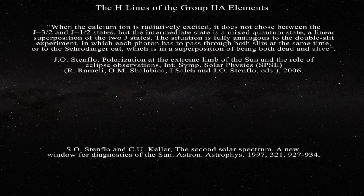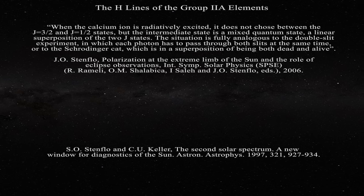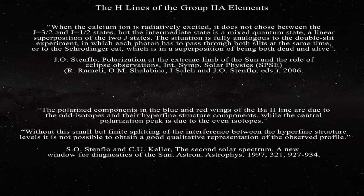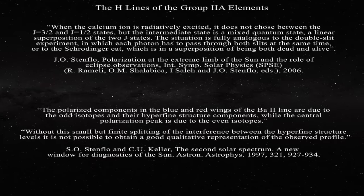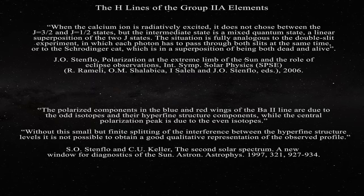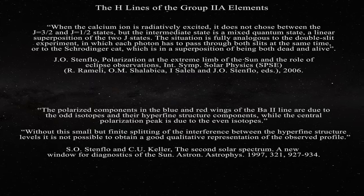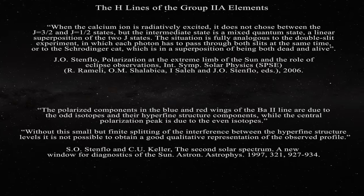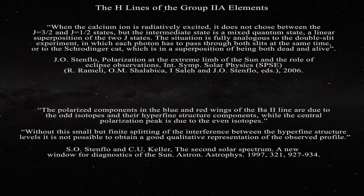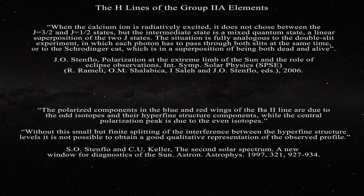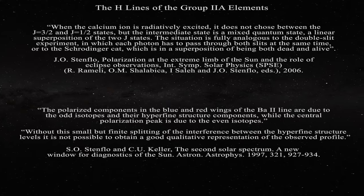Here is the quote in that case. The polarized components in the blue and red wings of the barium 2 line are due to the odd isotopes and their hyperfine structure components, while the central polarization peak is due to the even isotopes. The authors continue. Without this small but finite splitting of the interference between the hyperfine structure levels, it is not possible to obtain a good, qualitative representation of the observed profile. Does everyone see the problem with all of this?